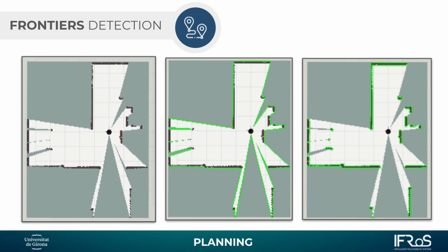The leftmost image is the OctoMap server. In the second image we are detecting contours based on the free cells, and in the third image we are detecting contours based on the obstacles. We will subtract the second image from the third image, and that is how we will get the Frontiers.